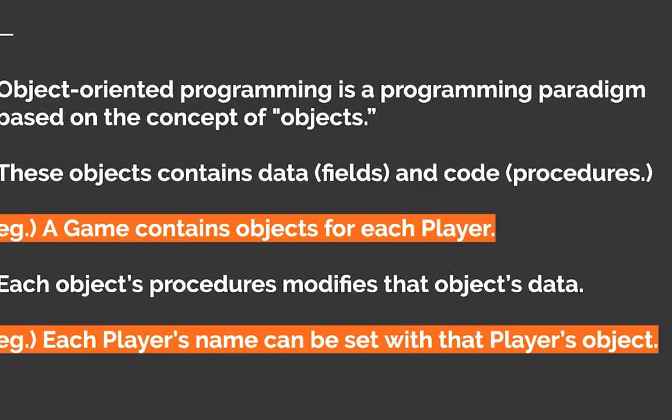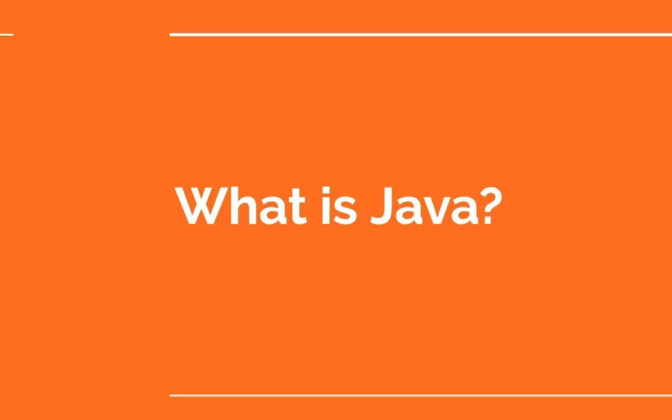Each player object's procedures will modify that player's data. For example, you can change each player's name with that player's object. Rather than changing all of the players, you can change one individually through that object. You can create multiple player objects through one player class. That is object-oriented programming. One example of an object-oriented programming language that can follow the paradigm of objects is Java.